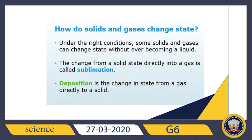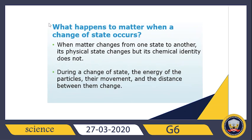When matter changes from one state to another, the physical state changes. We need to summarize what happens exactly to matter when a change of state occurs. Number one: the physical state changes, but its chemical identity doesn't.